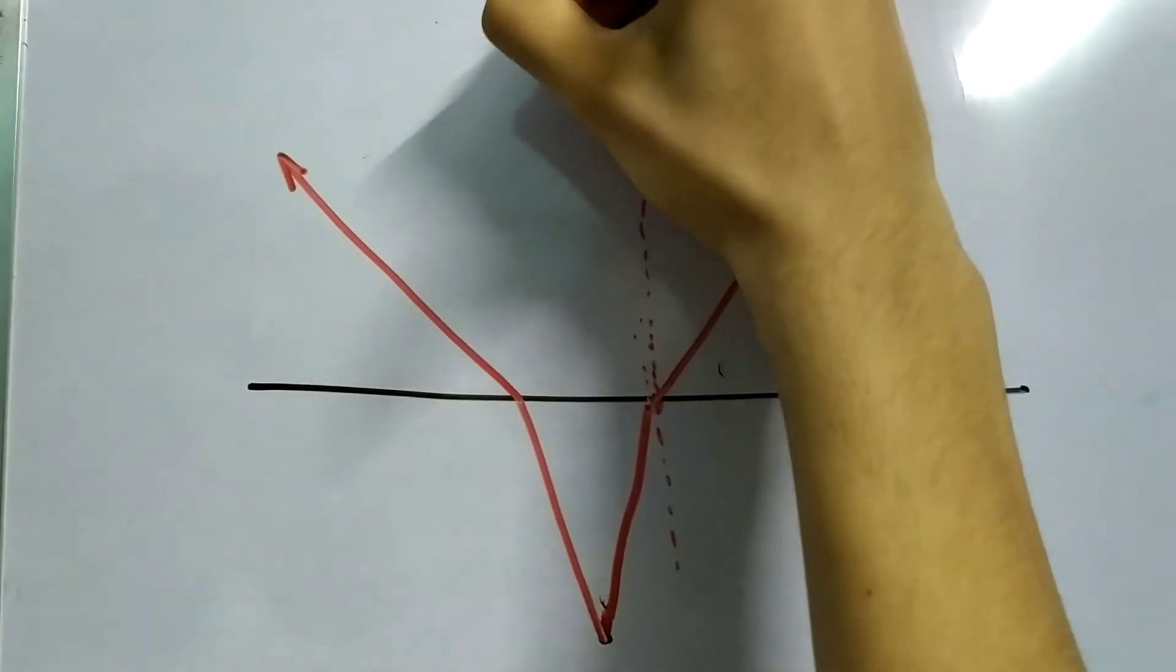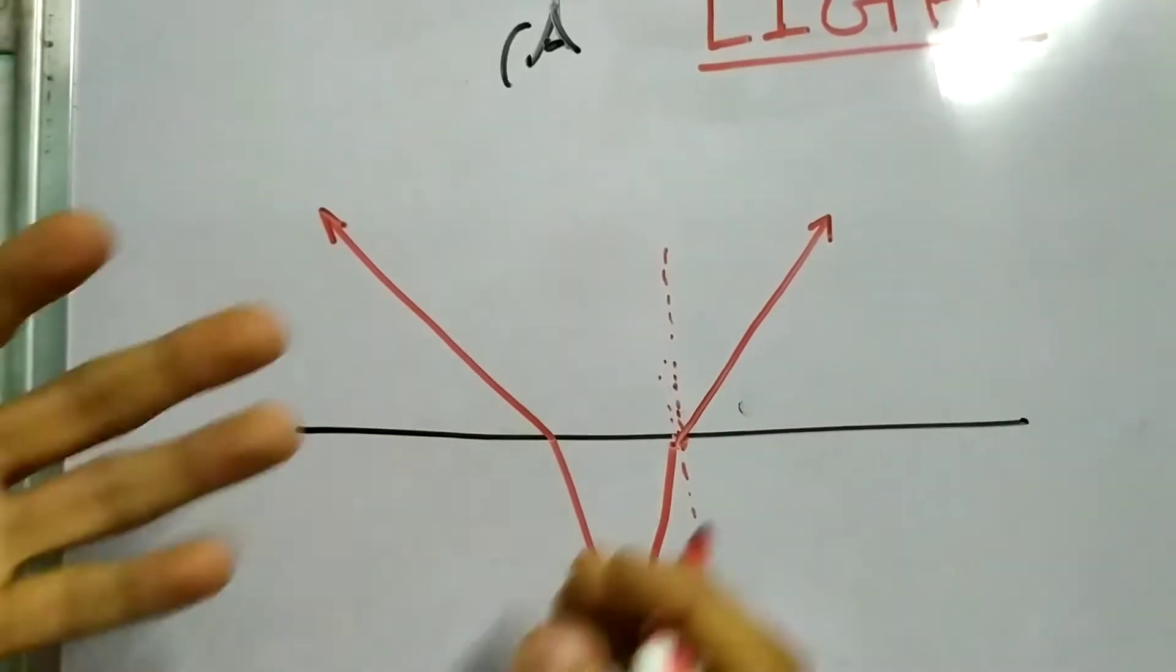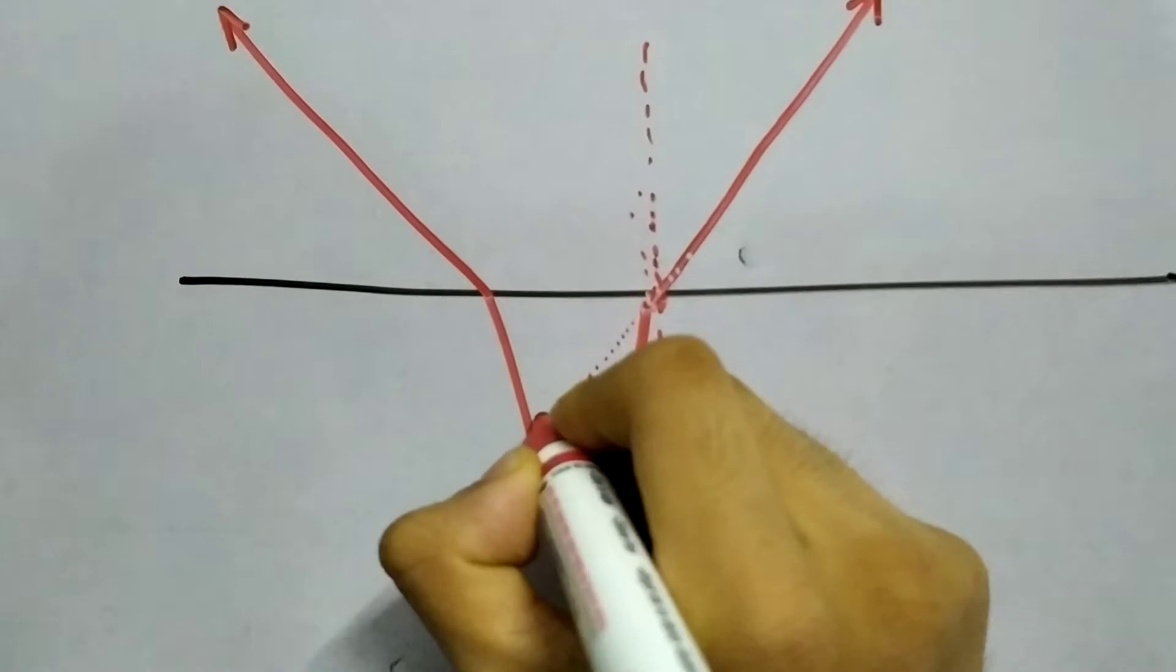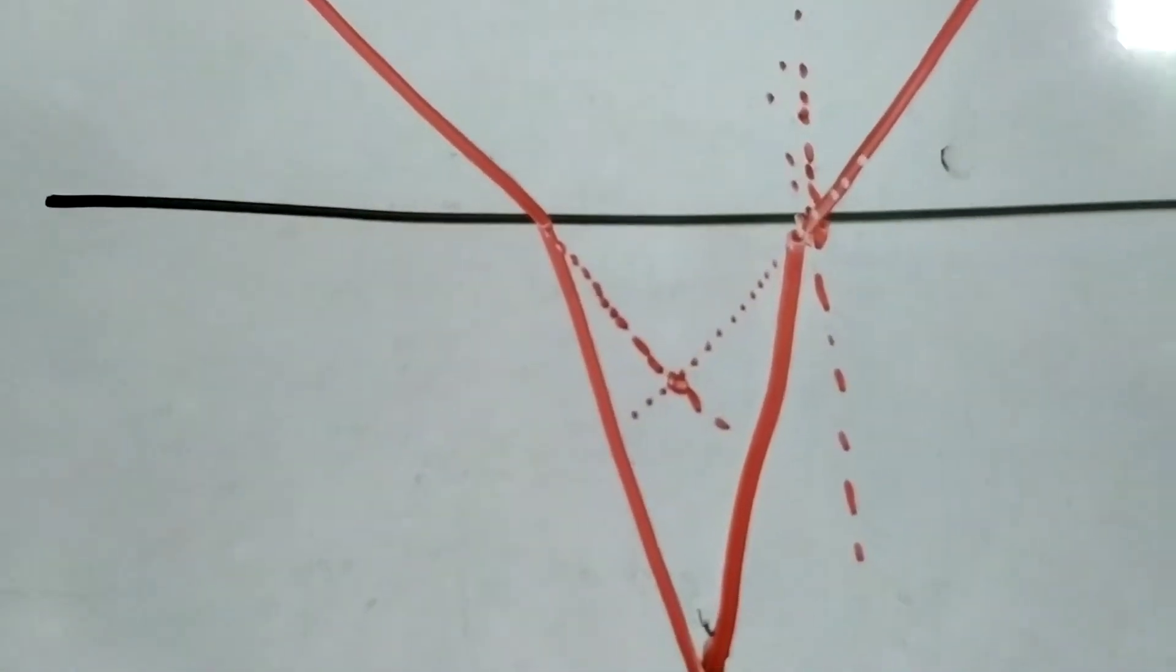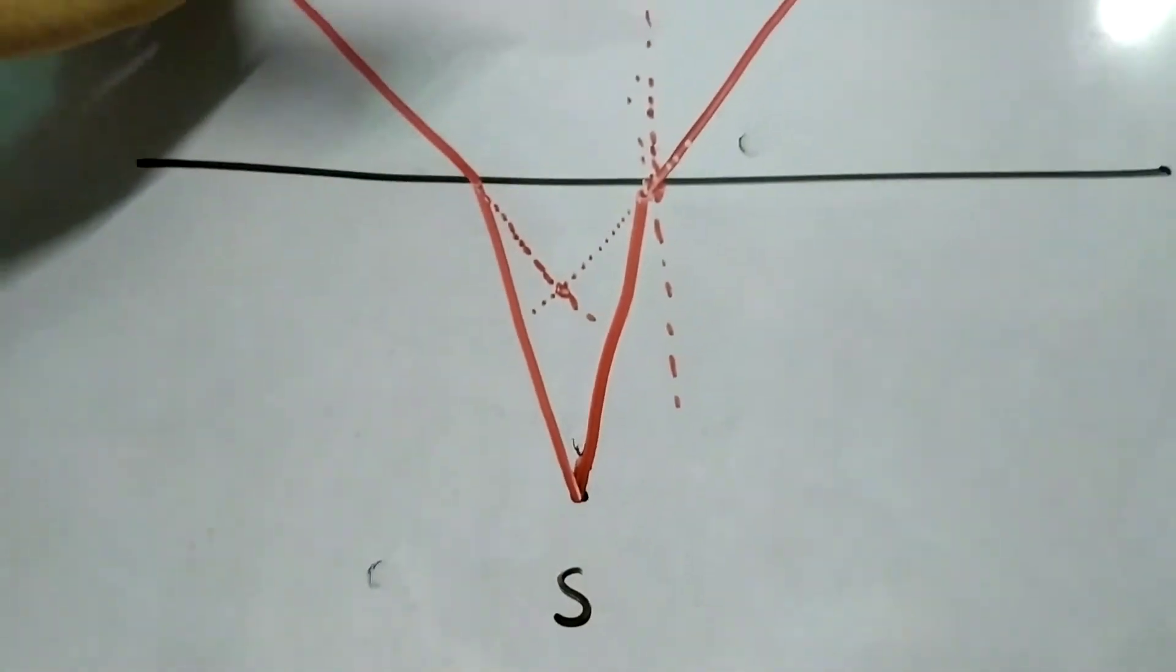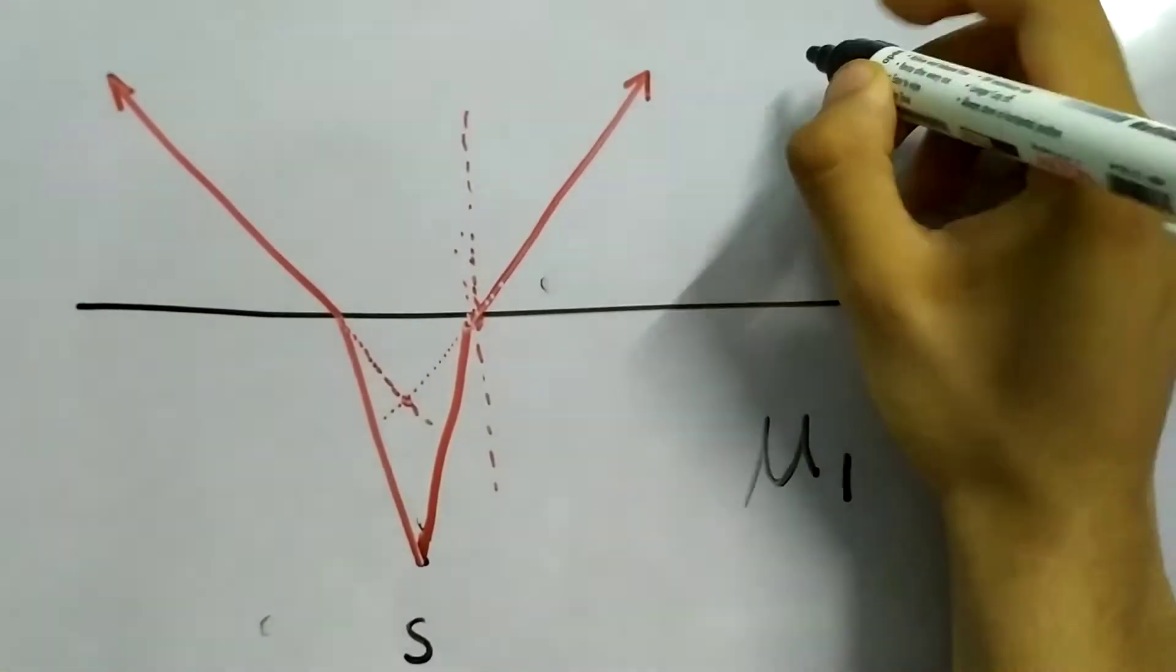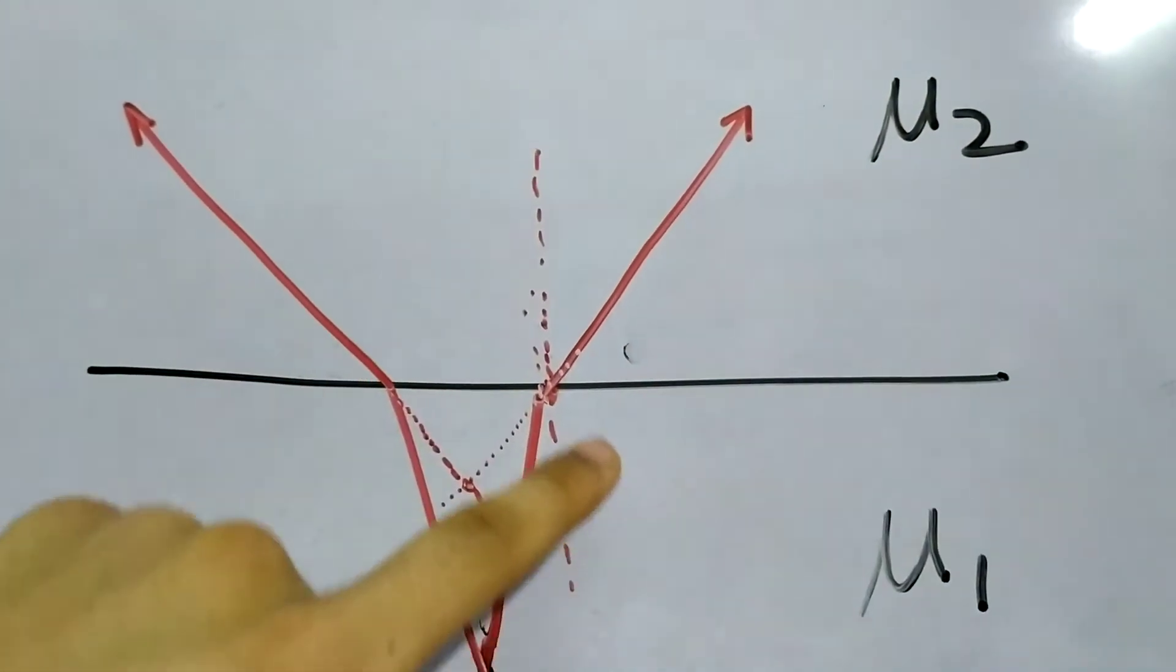Now if we observe this, rays are diverging and to the observer it will look as if the rays are coming from a point. We find these points by drawing these rays backwards. So here is the apparent source. This was the real source. And to the observer it looked as if it was shifted a little above. It is clear from the ray diagram.